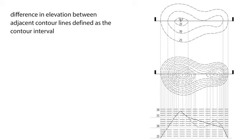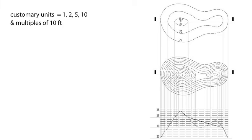The most common intervals in U.S. customary units are 1, 2, 5, 10, and multiples of 10 feet. In metric units, common intervals are 0.20, 0.50, and 1.00 meters.